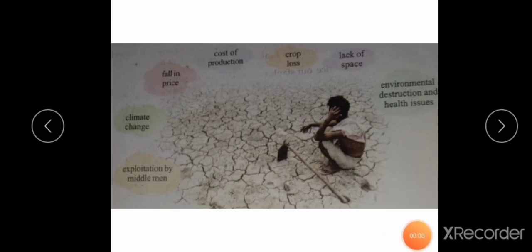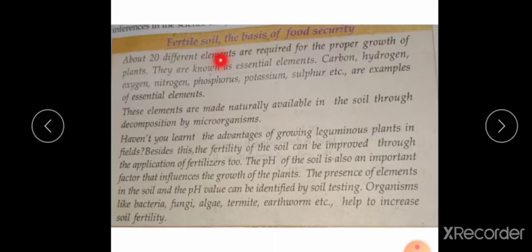So for cultivating agriculture or cultivating anything, the important thing is soil. If the soil is not fertile, we will not get any profit or yield. Around 20 different elements are required for the proper growth of plants. They are known as essential elements. Essential elements are carbon, hydrogen, oxygen, nitrogen, phosphorus, potassium, sulfur, etc.